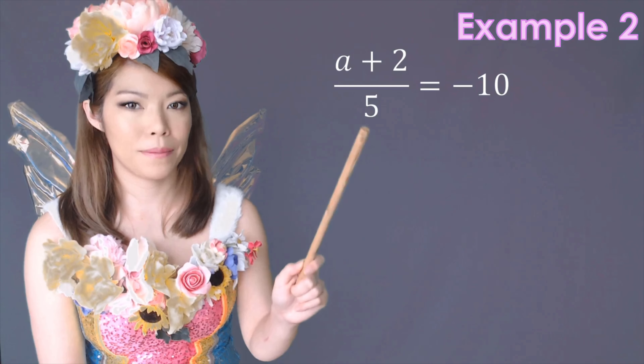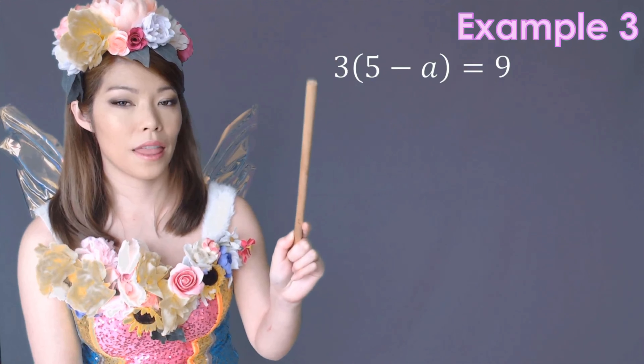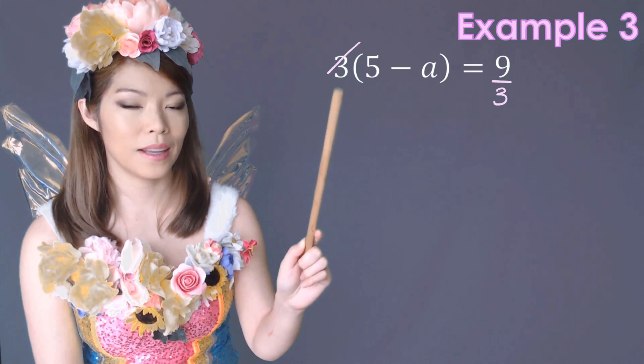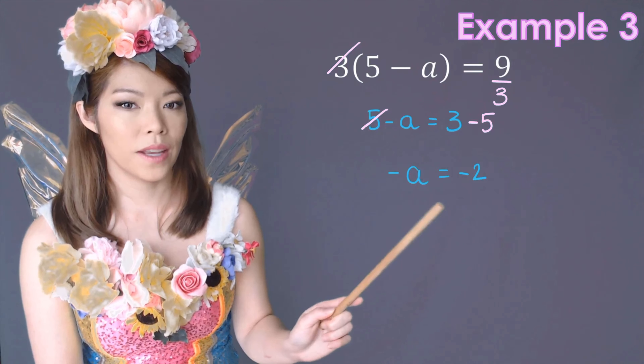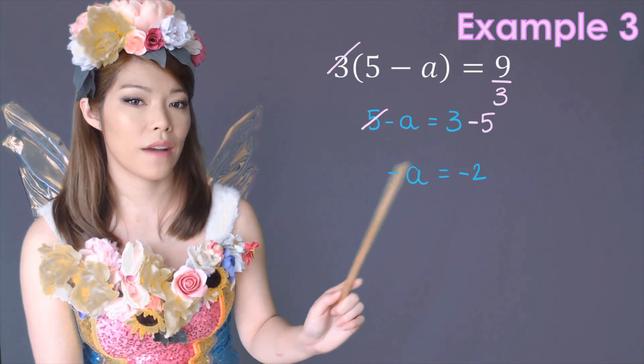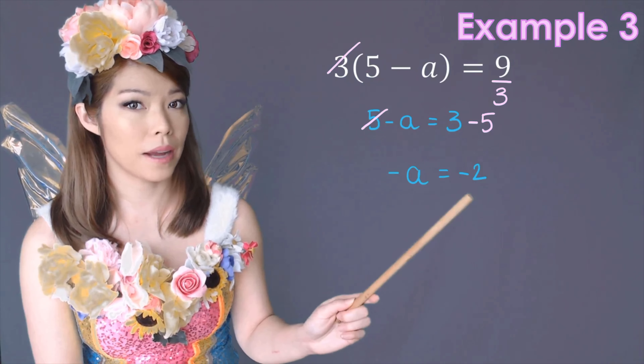One more example. Here we have 3 times 5 minus x equals 9. The furthest thing from x is that 3, so we're going to divide both sides by 3. So now it reads 5 minus x equals 9 over 3, which is just 3. We need to get rid of that 5. That's a positive 5, so the inverse of positive 5 is minus 5. So now we have minus x equals 3 minus 5, which is minus 2.